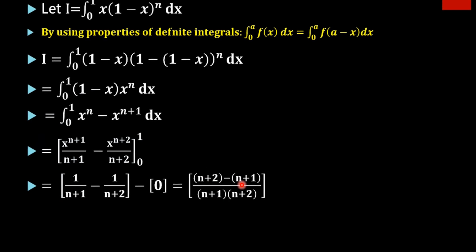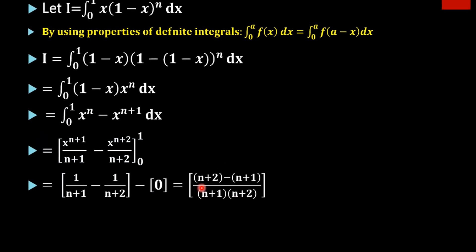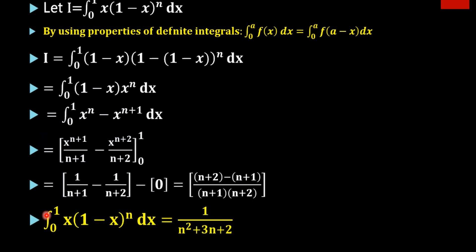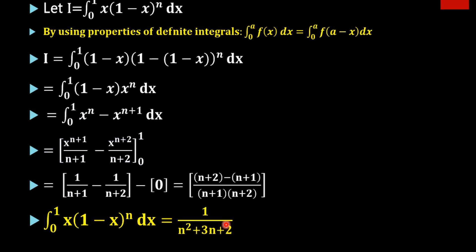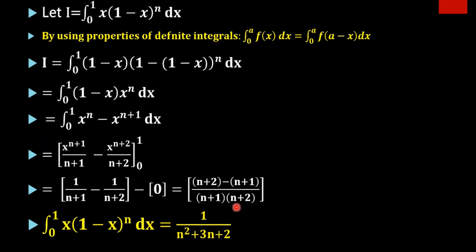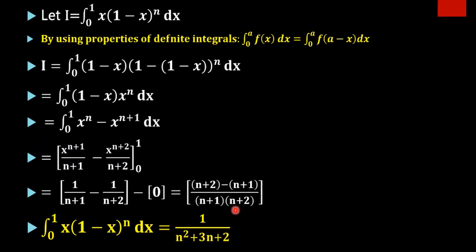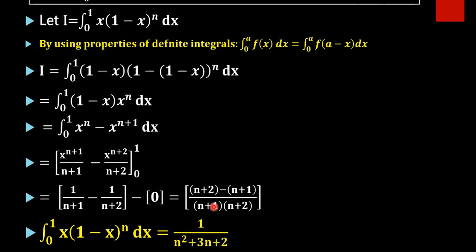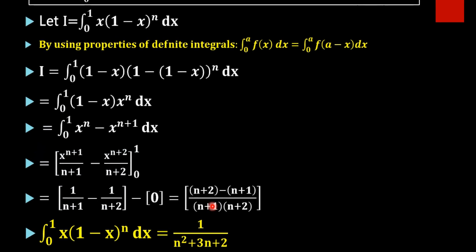Now n plus 2 minus (n plus 1): the n's cancel, and 2 minus 1 gives 1. So the final result is 1 divided by (n plus 1)(n plus 2), which can also be written as 1 divided by n squared plus 3n plus 2.